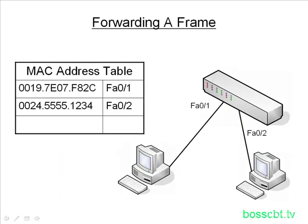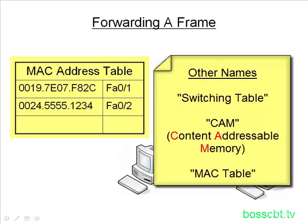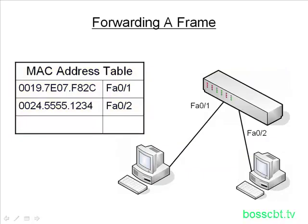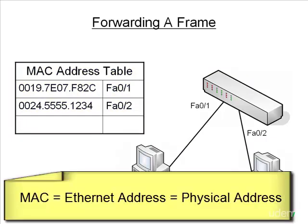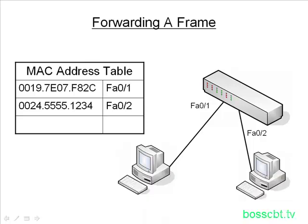At the heart of forwarding a frame on a switch lies the MAC address table, or the MAC table. You might have also heard the name switching table or CAM — CAM just stands for content addressable memory, referring to the type of physical memory used to hold the table. All these names refer to the MAC address table. The switch learns all the MAC addresses of the connected devices, makes note of which port it learned the address on, and throws them in a table.